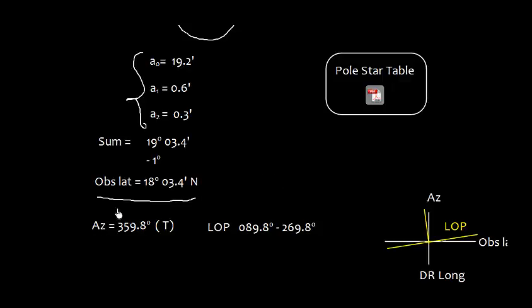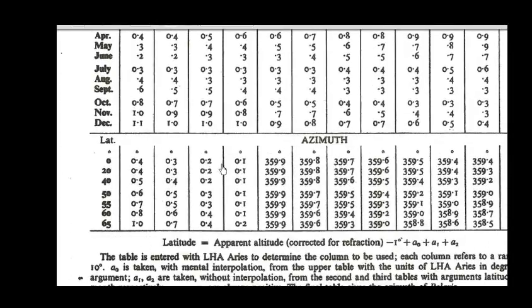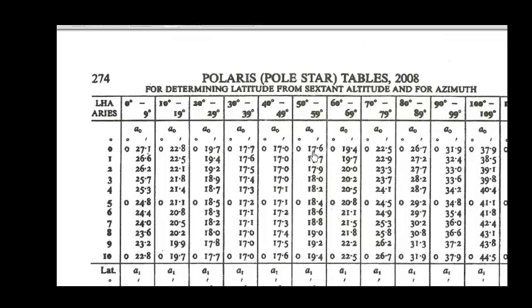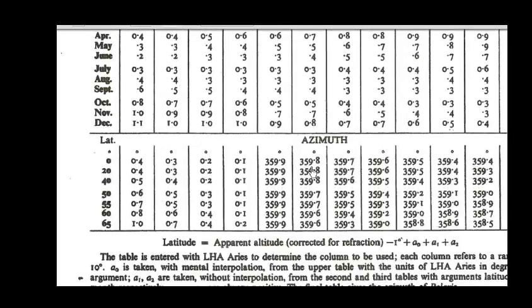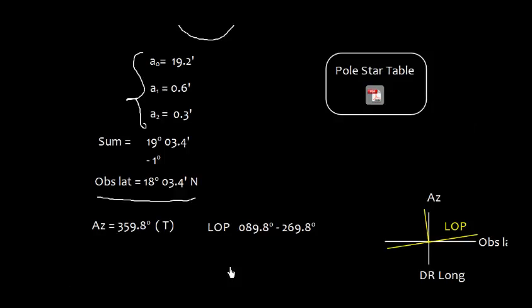Now similarly, we need to find azimuth. For that, again we can enter the table. If you enter the table for 20° in the same column, which was under this column 50° to 59°, this LHA 50° to 59° for 20° is 359.8°. So it will not matter what will be the value for 18°, so we'll take this 359.8°. So azimuth is 359.8°.